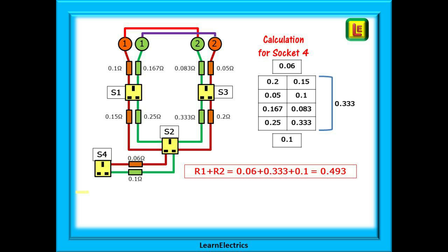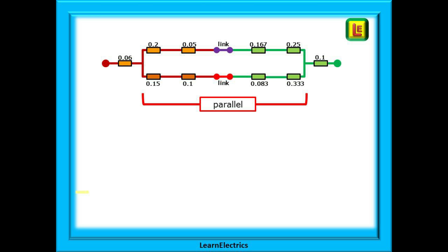The R1 plus R2 at socket number 4 is now 0.06 ohms for the extra line, plus all those parallel resistances that made up 0.333 ohms for the socket number 2, plus 0.1 ohms for the extra earth conductor. This is a resistance of 0.493 ohms. What we have at S4 is shown here. The middle bit is the parallel network of S2, plus the outside bits, the series path of the spur cable. This is called a series parallel network. Part of it is parallel, part of it is series.